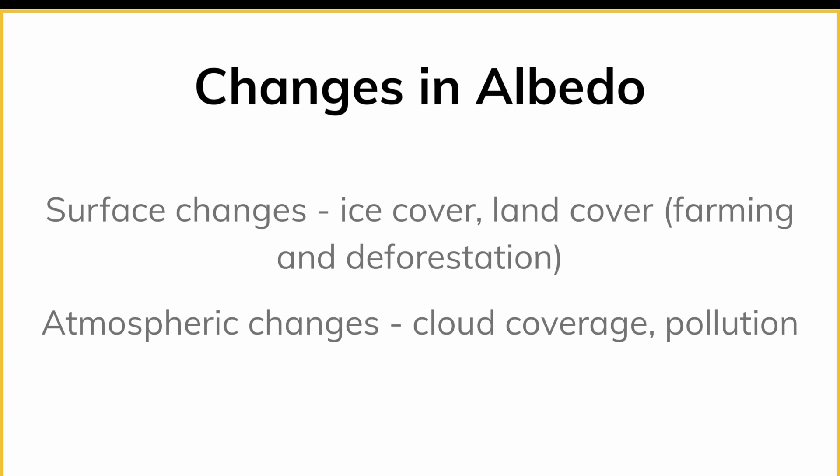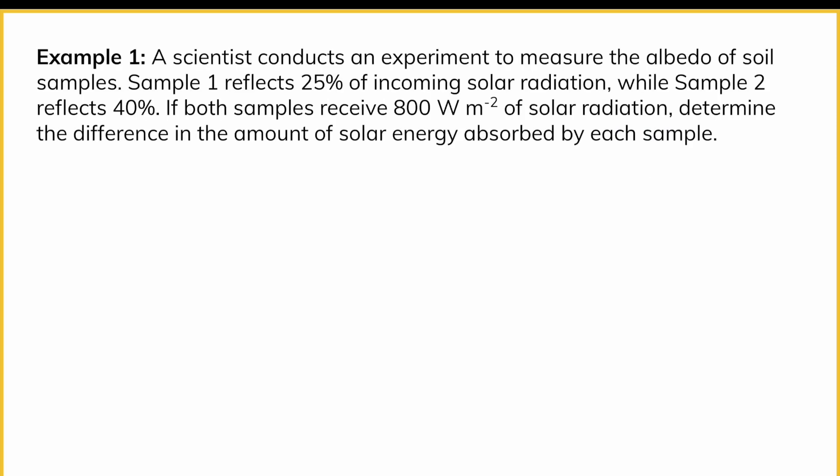One thing to discuss in regard to the greenhouse effect is ice cover. If the planet becomes warmer, there would be less ice cover, and with less ice cover, more energy is absorbed from the sun. We sometimes call this an accelerating effect: if the planet temperature increases and there's less ice, we absorb more energy, which increases the rate of planetary temperature increase.